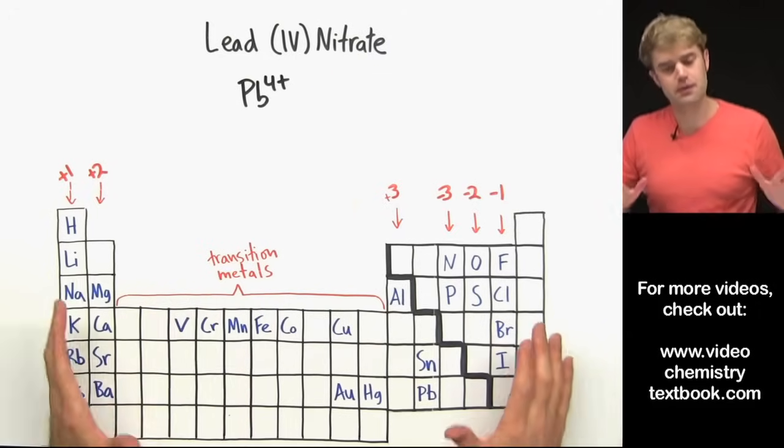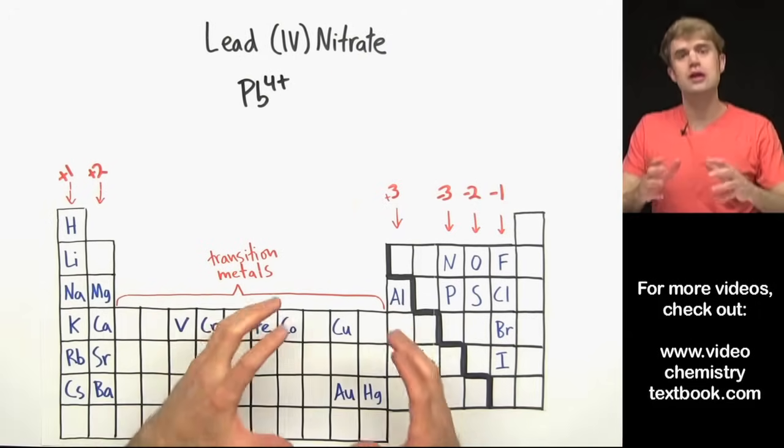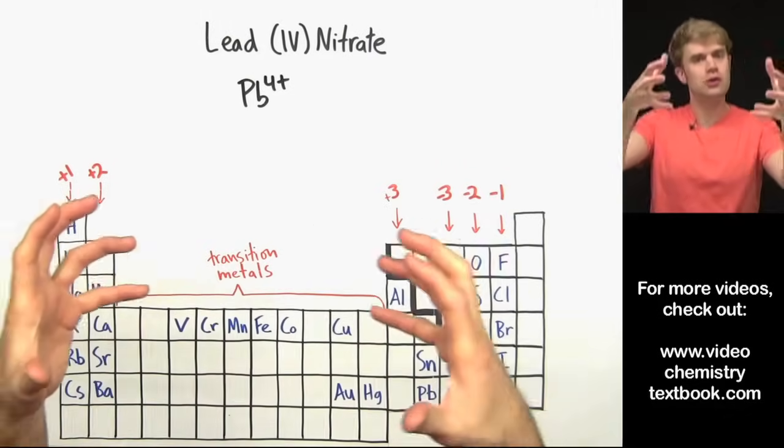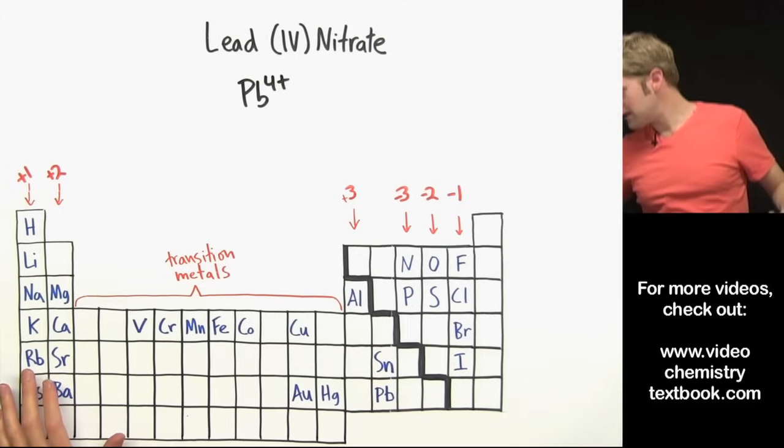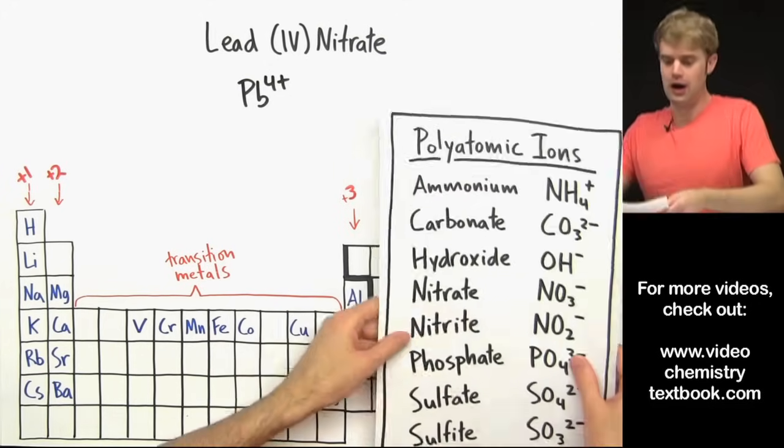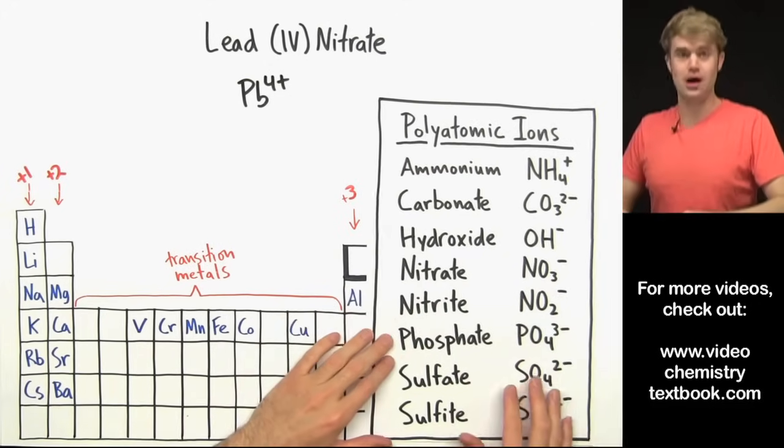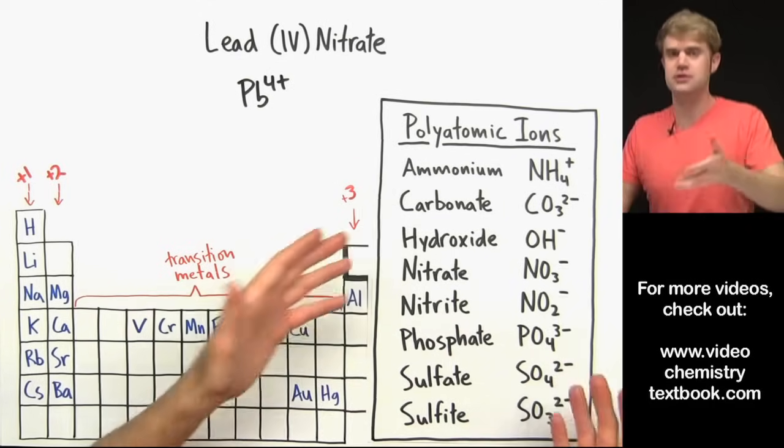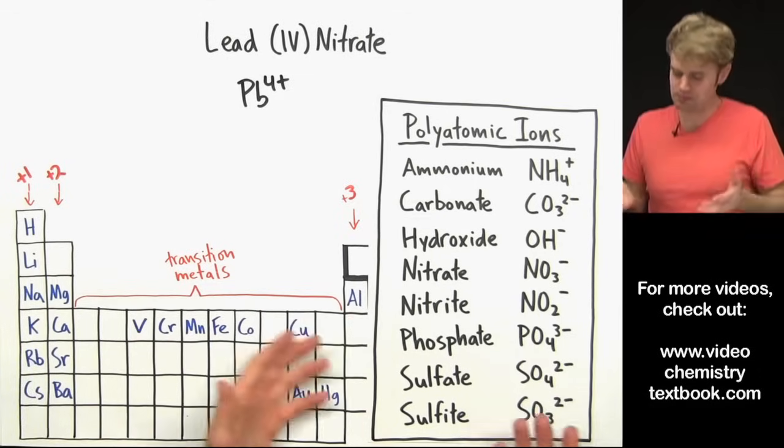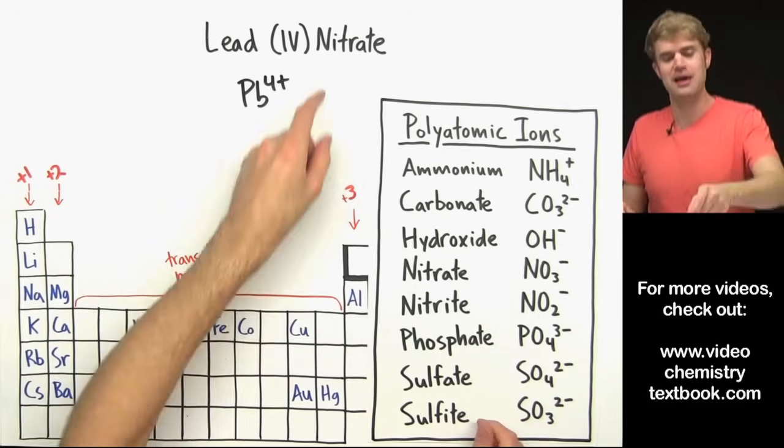Now nitrate isn't on the periodic table because nitrate is a polyatomic ion. It's a big clump of atoms that together have a charge. So for this we need to take a look at our list of polyatomic ions. How did I know that nitrate was a polyatomic ion? You just got to learn a list of the polyatomic ions. It's a pain but you just kind of got to do it.